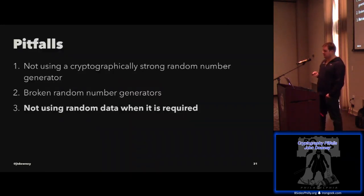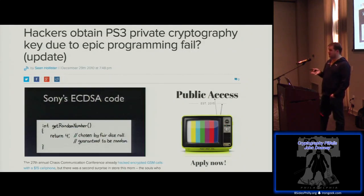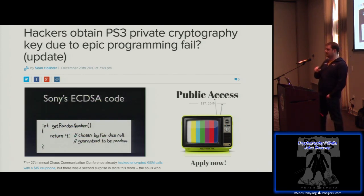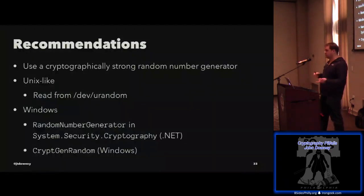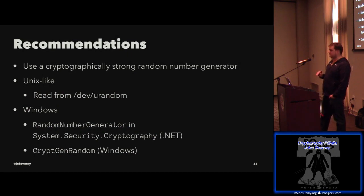The last random number pitfall: not using random data when it's required. This one bit Sony. Sony was using the Elliptic Curve Digital Signature Algorithm, which like its non-elliptic curve variants has a parameter k that must be uniformly random for every signature. It turns out they were using a constant value. Through algebra manipulation you can actually use this to get the private key that signs the data — they then went around and used that to load homebrew software. The vital lesson: use a crypto-strong random number generator. On Unix-like systems, read from /dev/urandom. On Windows, use System.Security.Cryptography.RNGCryptoServiceProvider.